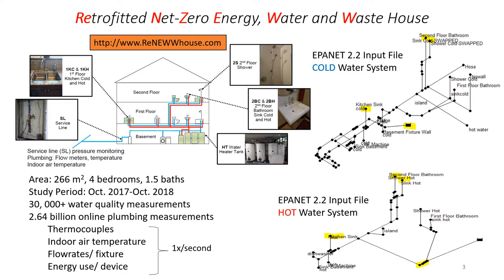This house has an area of 266 meters squared, has four bedrooms and one and a half bathrooms, and was monitored over a one-year period. Throughout this period, over 30,000 water quality measurements were collected at five locations as grab samples, and over 2.6 billion online plumbing measurements were collected in the form of thermocouples, indoor air temperature, flow rates per fixture, and energy use per device, collected once per second.